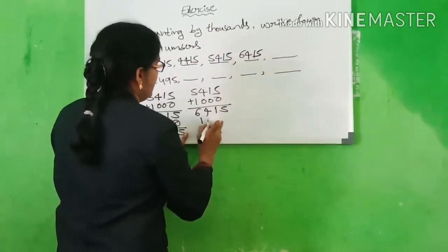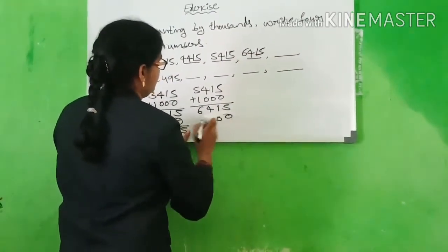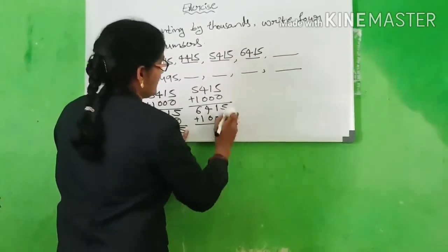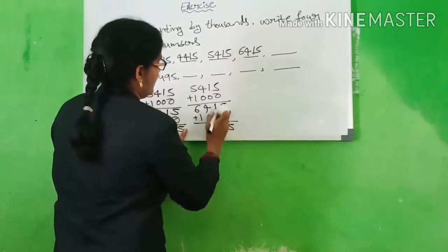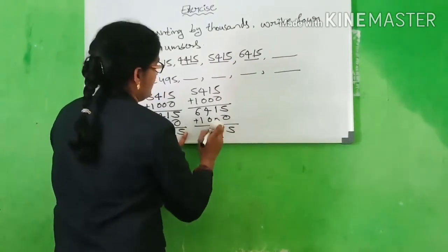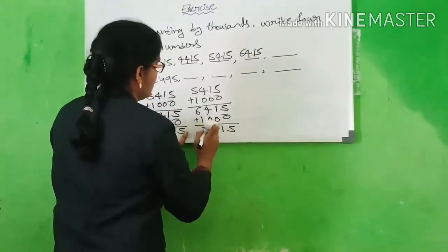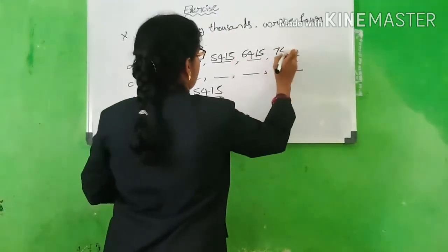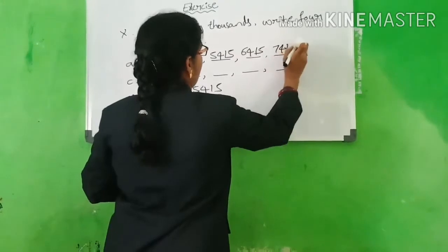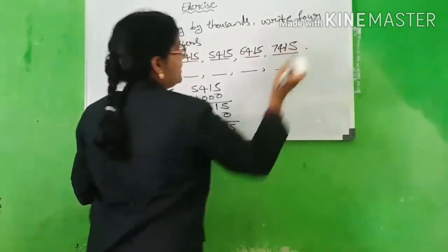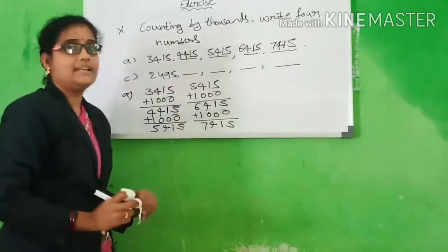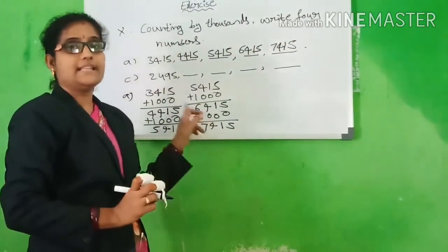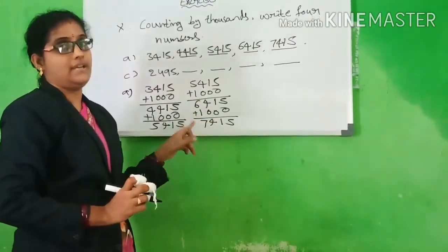Next, add 1000: 5, 1, 4, 6 plus 1 is 7. We get 7,415. Okay, children? Understand this one? Okay.